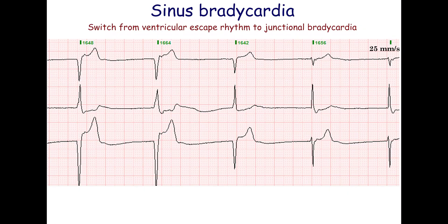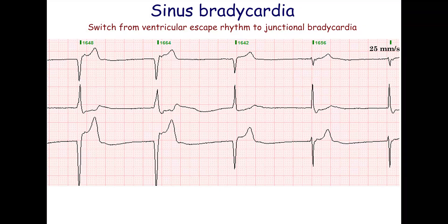Complexes with an intermediate morphology between supraventricular and ventricular complexes are called fusion beats. They are wider than supraventricular beats but narrower than ventricular beats. Fusion beats occur when the ventricles are activated simultaneously by two impulses, one of supraventricular origin and one of ventricular origin.